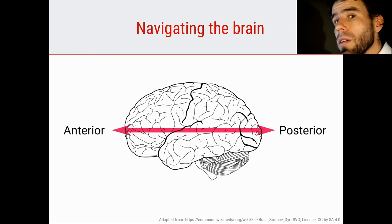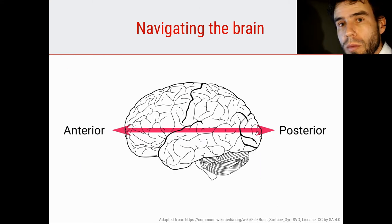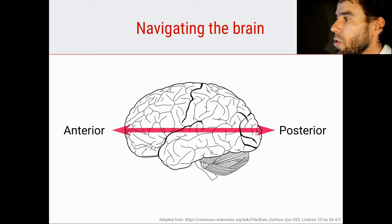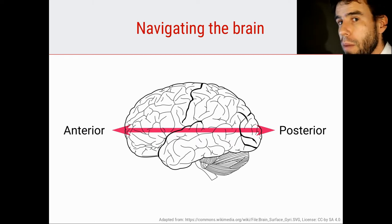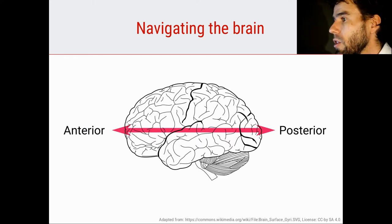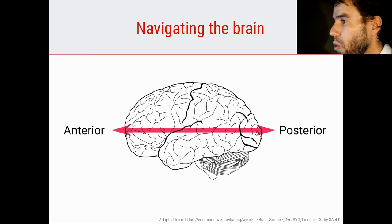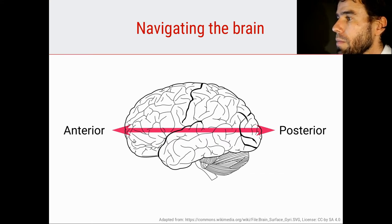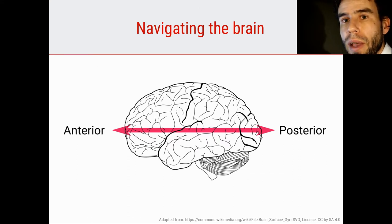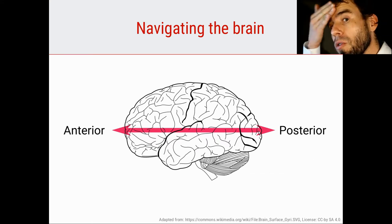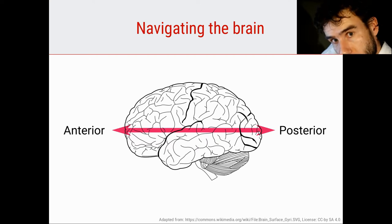Here we have the first two terms I'd like to introduce, which are very simple: anterior and posterior. Anterior simply means the front of the brain — so this is the front on the left — and the posterior part, the back of the brain. So the front is here and the back is here.